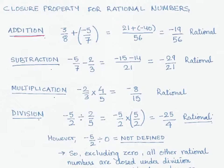We take any two rational numbers — in this case a positive rational number and a negative number. Let's try to add 3/8 plus negative 5/7. This is very similar to adding fractions; the only difference is we also have a negative number in the form of p by q, so we have to be careful of the negative sign. We can use the same method — taking the LCM of the denominators.